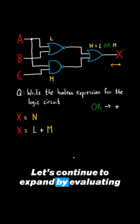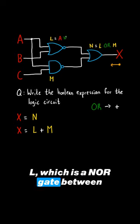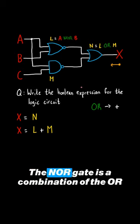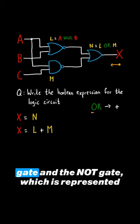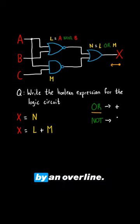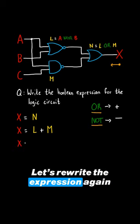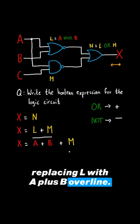Let's continue to expand by evaluating L, which is a NOR gate between inputs A and B. The NOR gate is a combination of the OR gate and the NOT gate, which is represented by an overline. Let's rewrite the expression again, replacing L with A plus B overline.